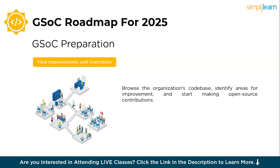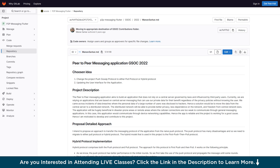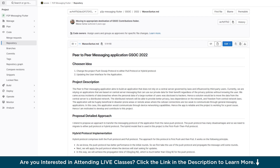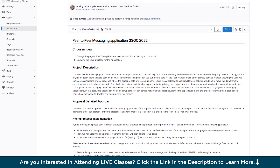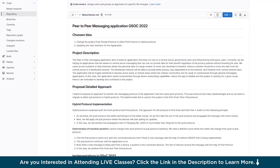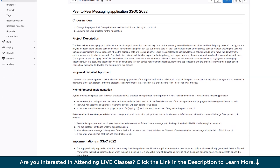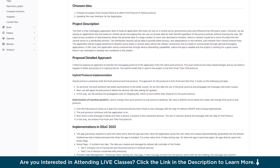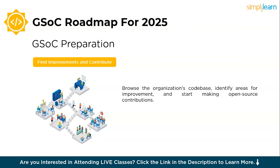Select projects that match your skill set and interests. Focus on projects where you can make meaningful contributions while also learning something new in the process. Next, find improvements and contribute — browse the organization's codebase, identify areas for improvement, and start making open-source contributions. This can include fixing bugs, optimizing code, or improving documentation. Small contributions can make a big impact.